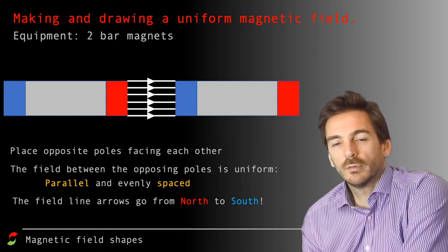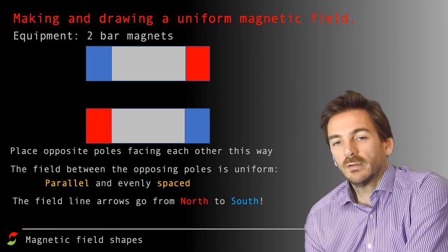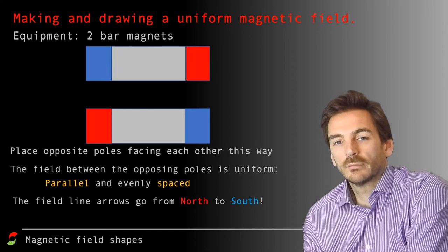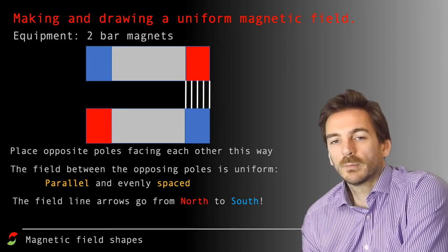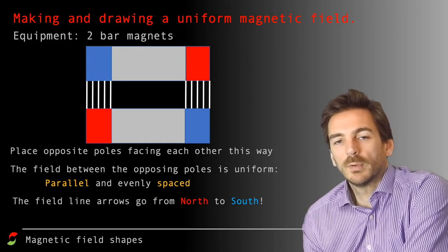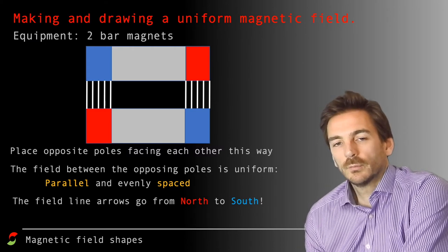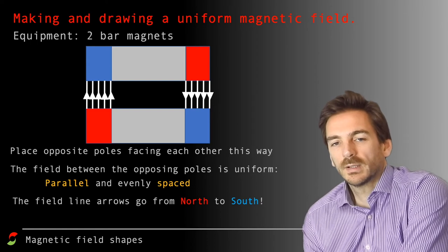Another way, still using two bar magnets, and still having opposing poles facing each other, but having them parallel to each other this way, you get two areas where there are opposing poles. So this is one area where there's an opposing pole, and here's another area where there's an opposing pole. We've got to remember to draw the arrows in to represent the direction of the field lines. So it goes from north to south, red to blue in this case. So there we've got our uniform magnetic field lines.